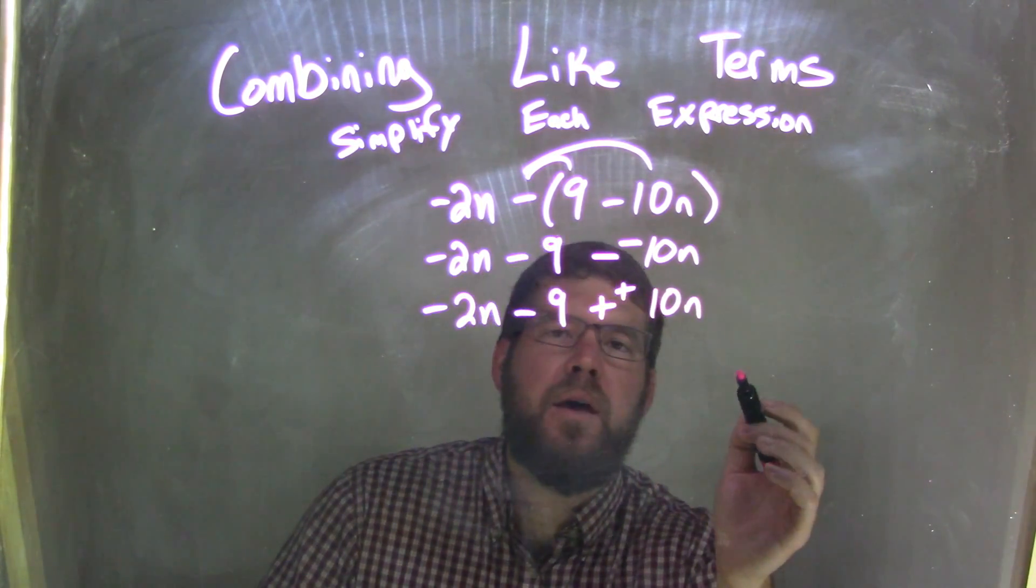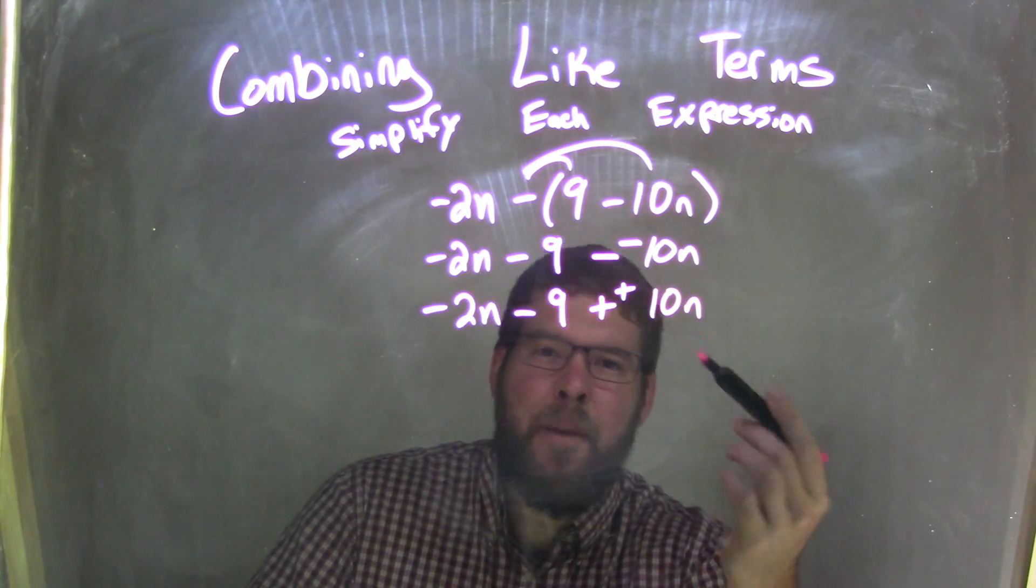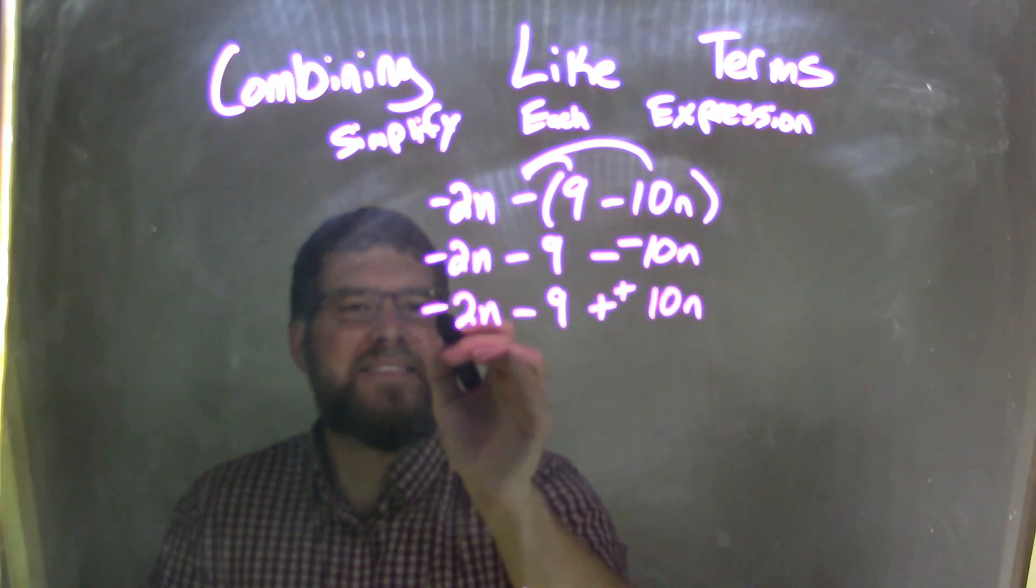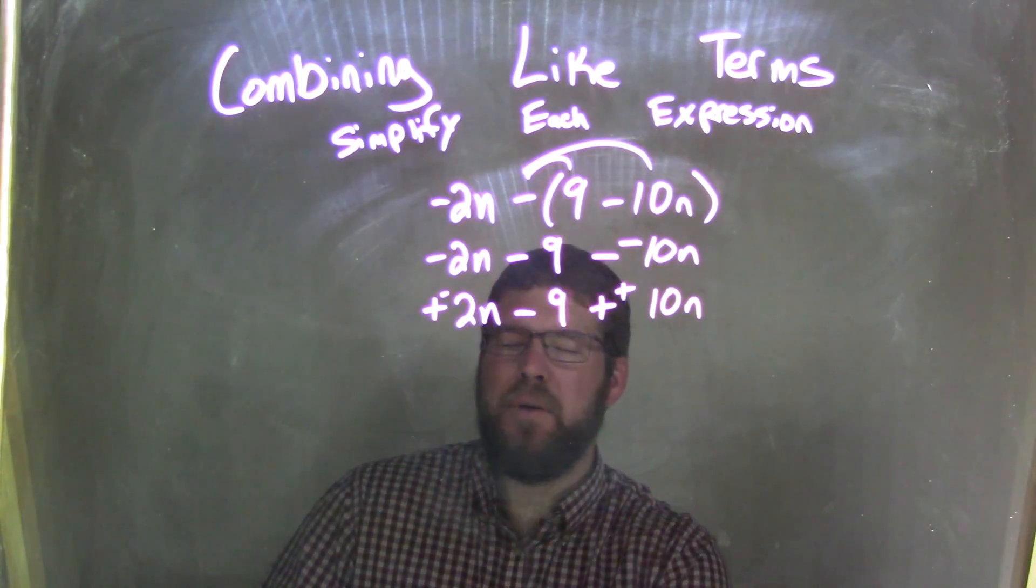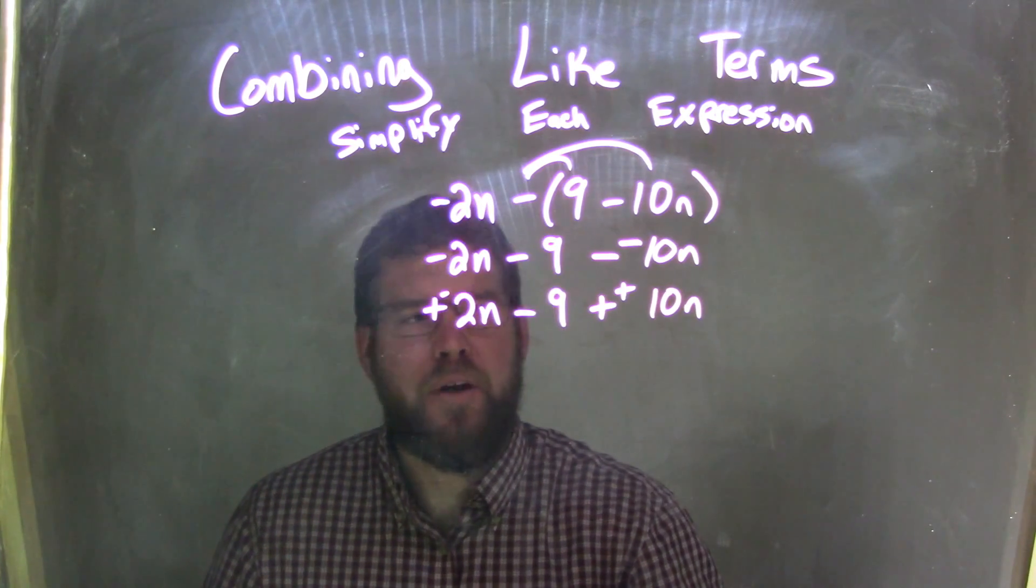Take your time with this. So now I want to use the commutative property. Take the 10n, and I'm going to put it all the way to the beginning. Because this minus 2n is the same thing as plus a negative. Now you don't need to do this step every single time with that plus a negative, but it does help to visualize that in your head and then convert it back down.